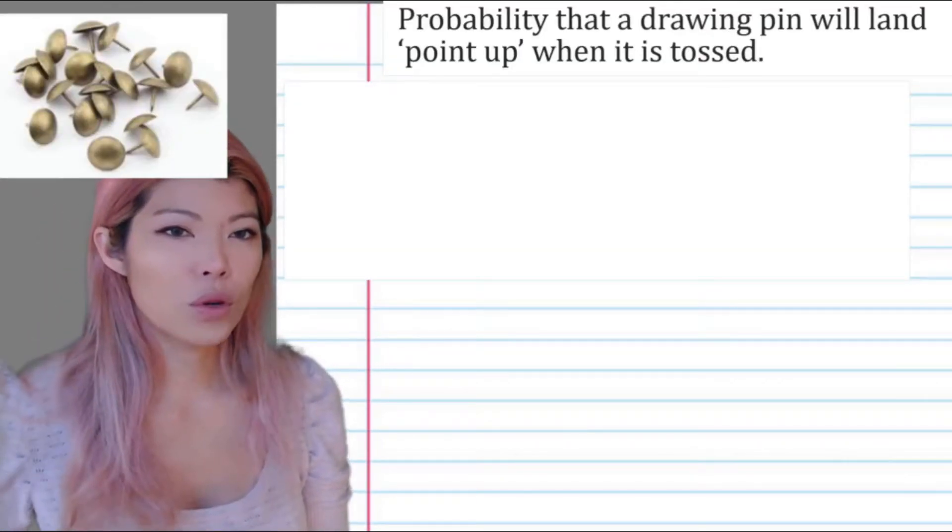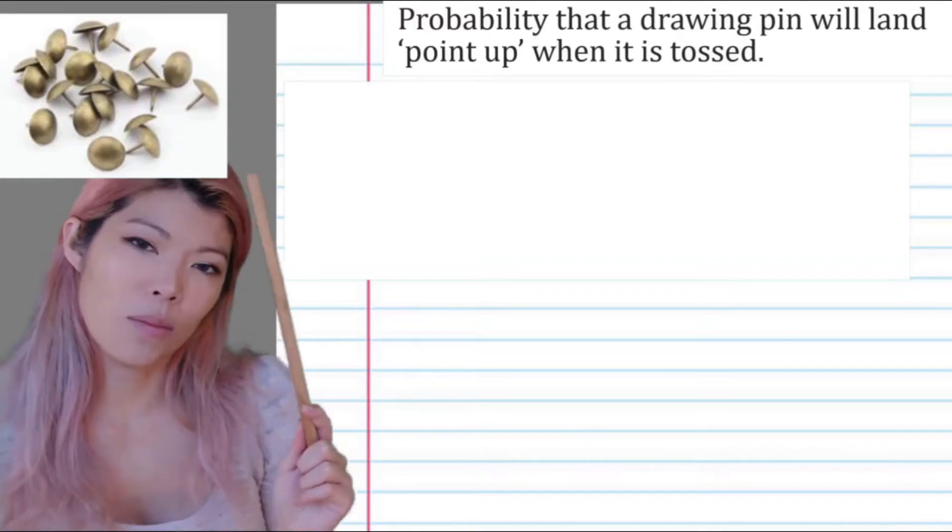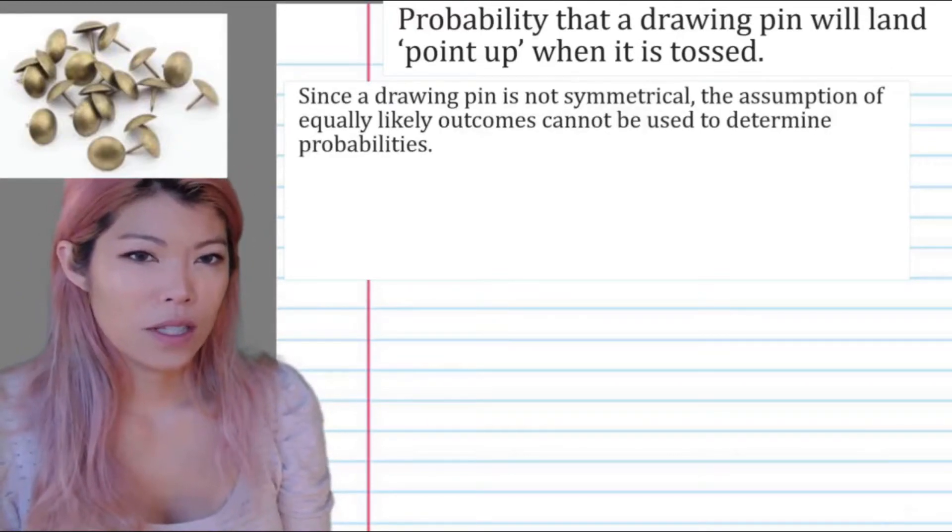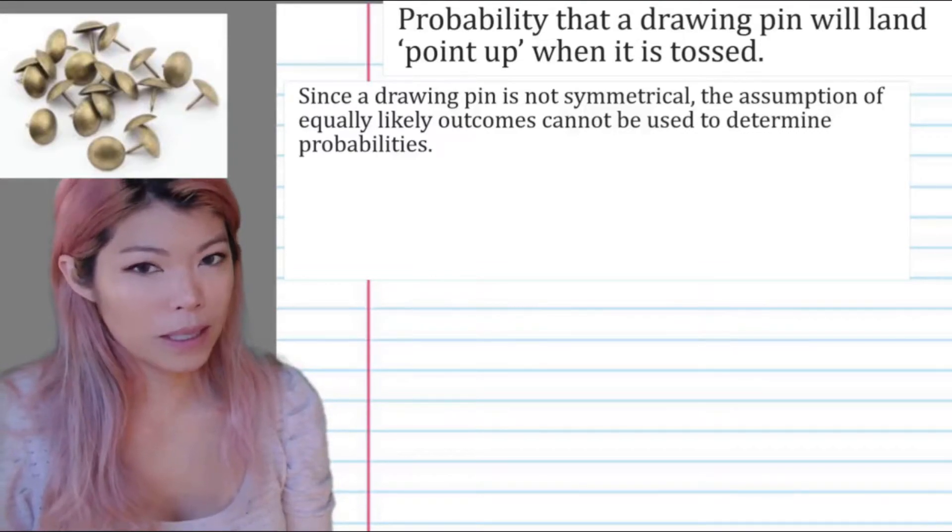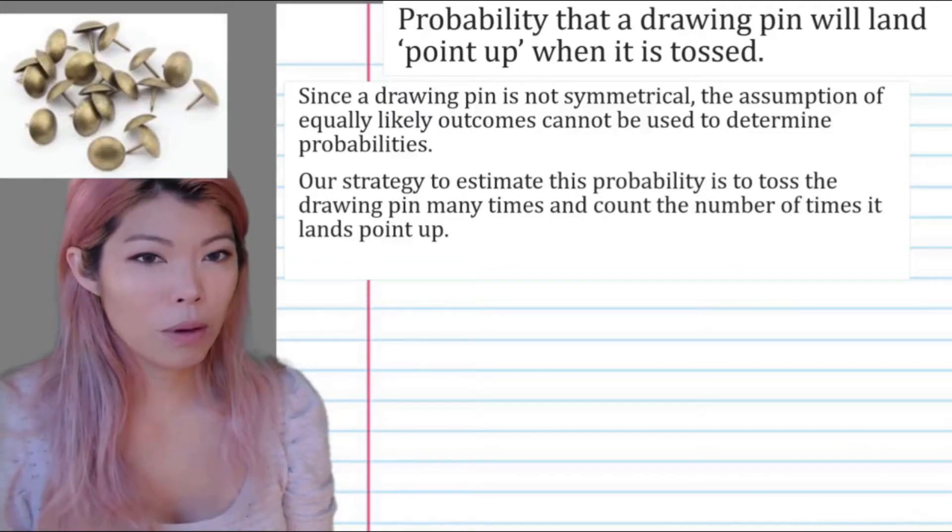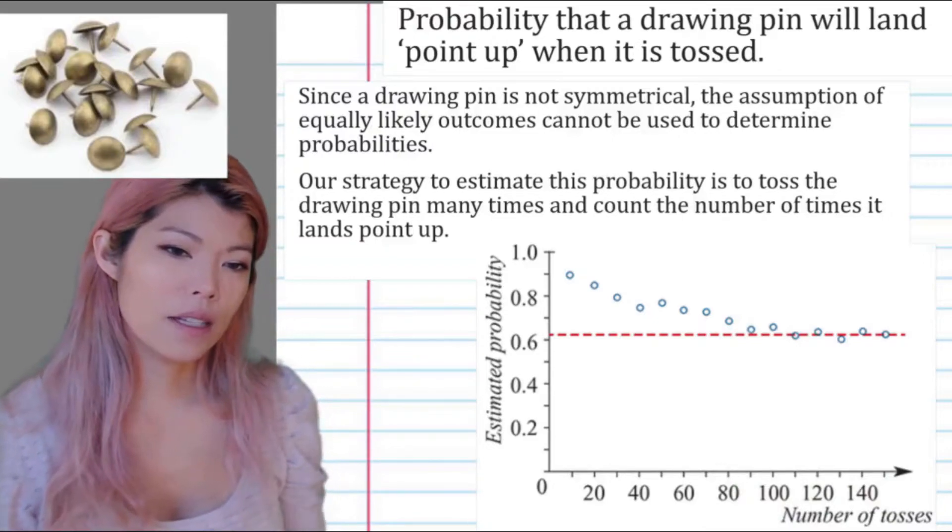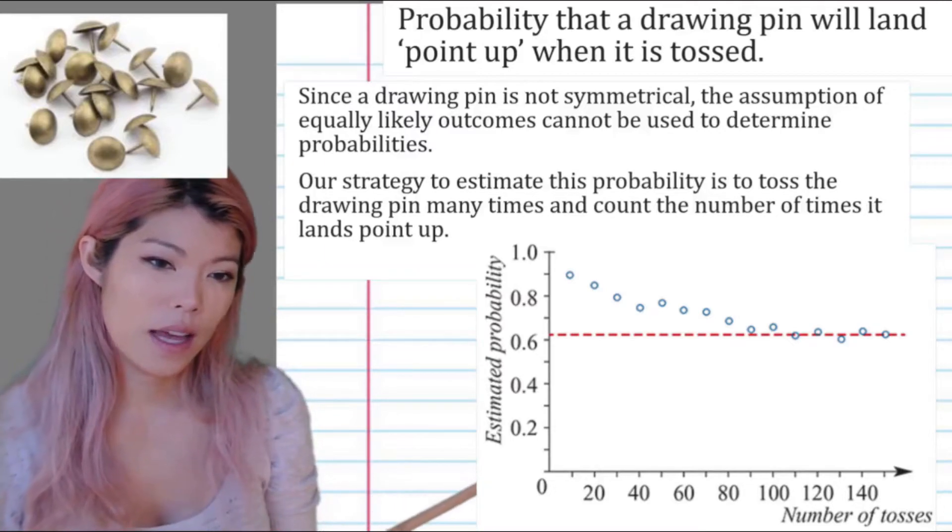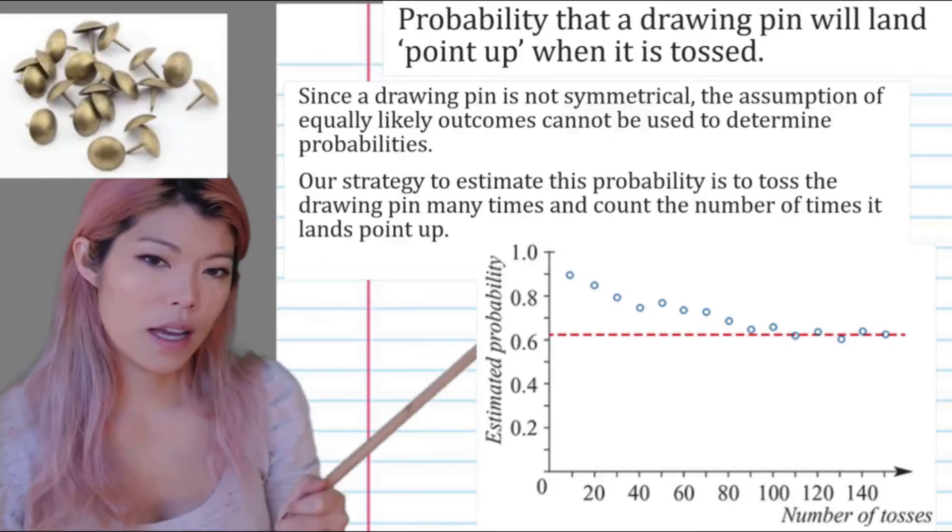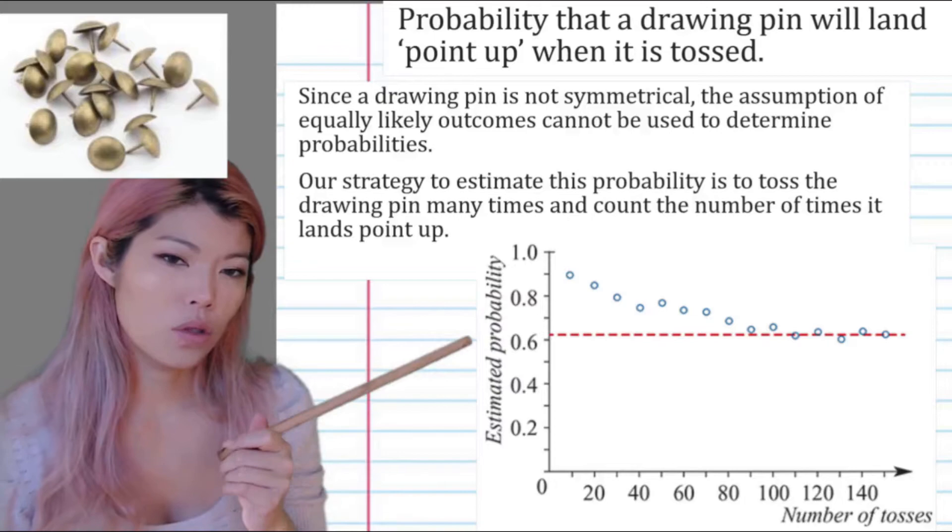Here we have the probability of drawing a pin with the pointer up. It's not going to be 50-50 landing the pin on the side or point up. Since it's not symmetrical, the assumption of equally likely outcomes cannot be used to determine the probabilities. Our strategy is to estimate the probability by tossing and seeing how many times the pin points up. This is a graph to describe what we said before about heads and tails. You can see that as the number of tosses increases, the result of the probability becomes closer and closer to just a single value.